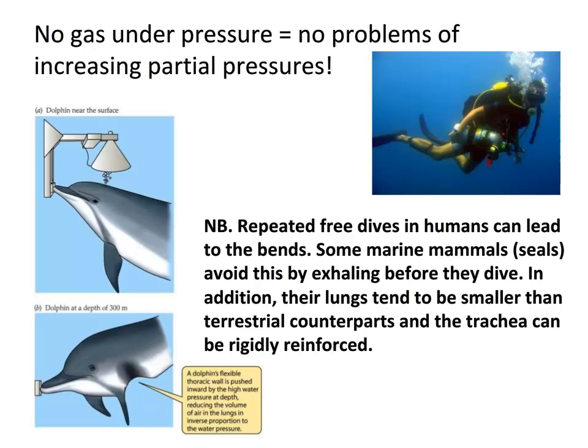All diving mammals must come to the surface to breathe oxygen, because they have lungs, not gills — they're mammals. The total pressure of gas in their lungs is one atmosphere at the surface, and when they dive, unless their ribcage collapsed (which it doesn't), that gas pressure stays at one atmosphere. So they won't suffer the bends, oxygen toxicity, or narcosis — but they will suffer from a lack of oxygen supply.